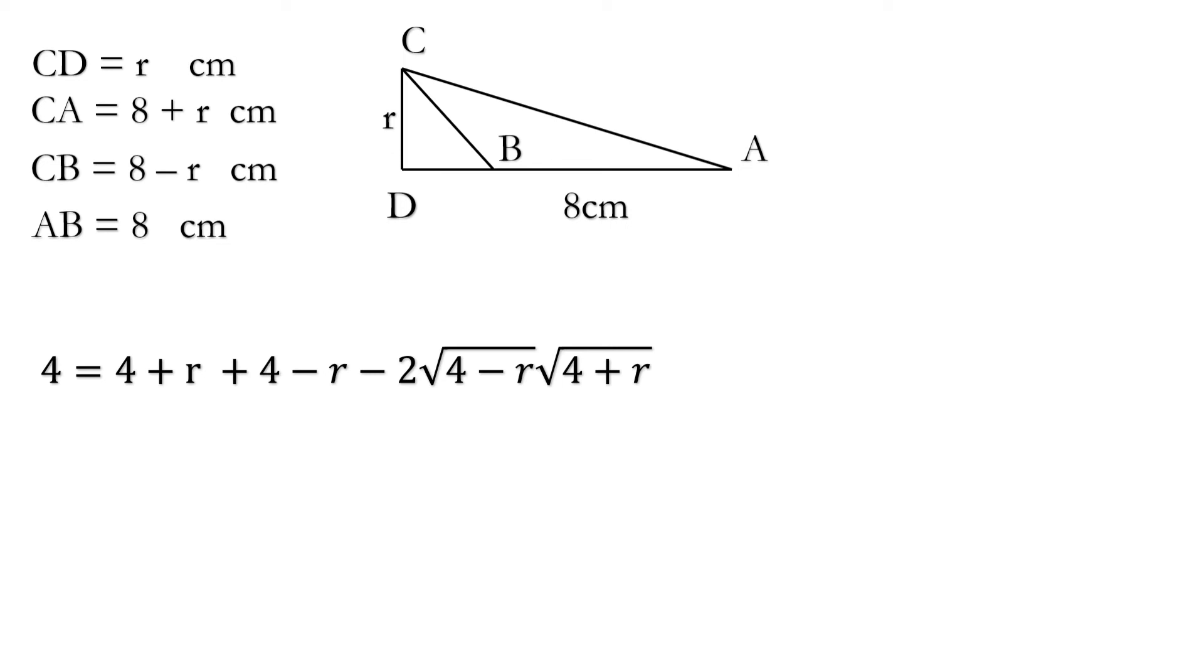On further solving we get R squared is equal to 12. Now applying the formula for area of circle we have area of red circle is equal to 12 pi square centimeters and this is our solution.